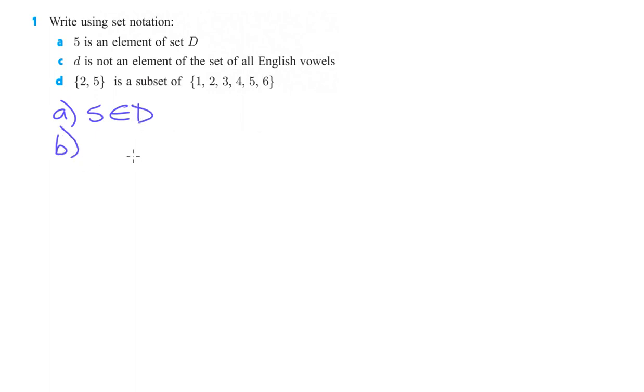Okay, B, actually I take that back, C is next. I'm just going to do some of these, not all of these. C, D is not an element of the set of all English vowels. So D is not an element, E with a slash through it, the set of all English vowels. We could even do the little set notation, English vowels. All right, that was a terrible attempt at the bracket. That's a little smidge better.